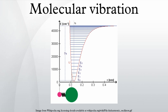Internal coordinates are of the following types, illustrated with reference to the planar molecule ethylene: stretching, a change in the length of a bond, such as C-H or C-C; bending, a change in the angle between two bonds, such as the HCH angle in a methylene group.